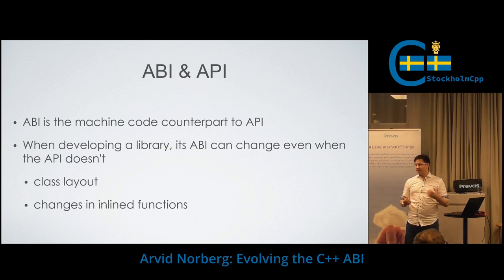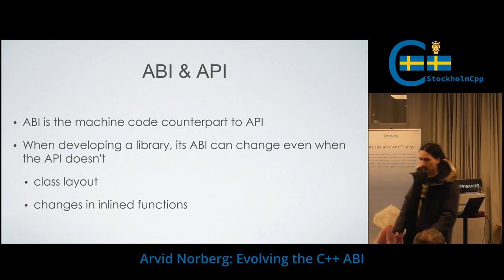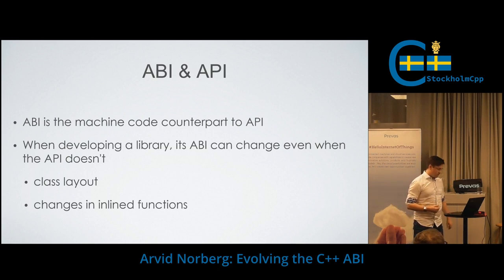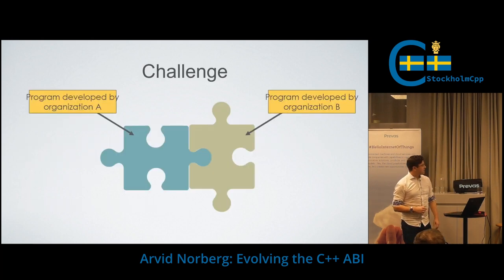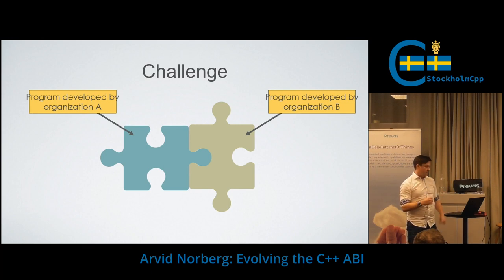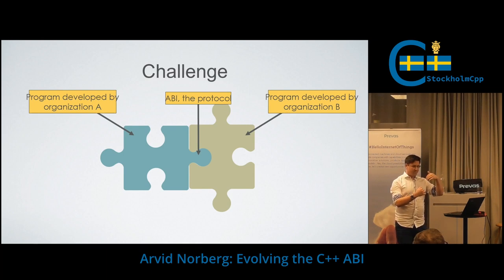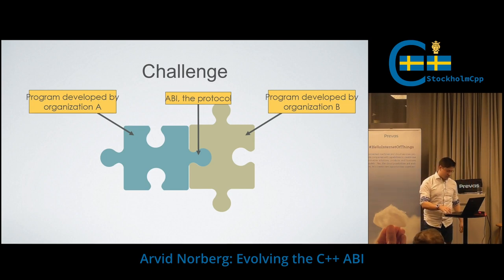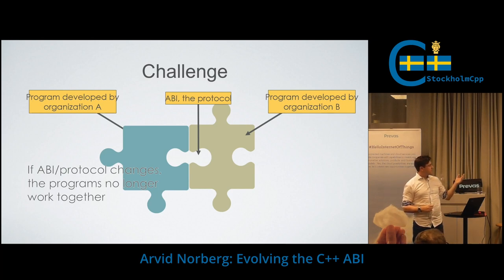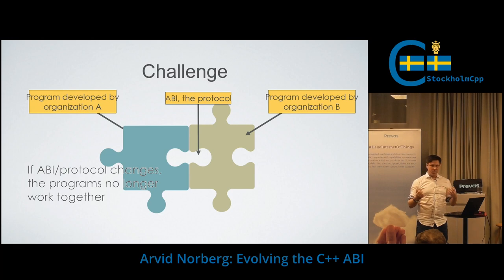You could say that the ABI is sort of like the API, but for the zeros and ones of binaries talking to each other versus source code talking to each other. Things like class layout or inline functions affect the ABI. These are two programs written by two separate organizations that need to talk to each other. In between, they have the ABI to define this interface — you could consider it a network protocol. They need to agree on how to speak to each other, and if the ABI changes, they won't work together anymore. The symptom of this happening is often subtle memory corruption; in the best case, it's a link error.